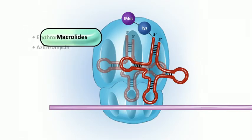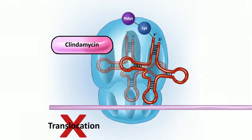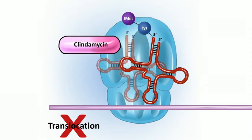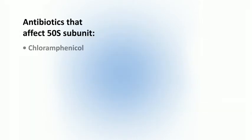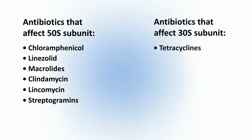Macrolide antibiotics — including erythromycin and azithromycin — bind to the 50S subunit and inhibit the translocation step. Clindamycin also binds to the 50S subunit and blocks translocation. Lincomycin and clindamycin are both classified as lincosamides; they both bind 50S and inhibit translocation. The streptogramins do the same thing. So antibiotics affecting the 50S subunit include chloramphenicol, linezolid, macrolides, clindamycin, lincomycin, and streptogramins; those affecting the 30S subunit are tetracyclines and aminoglycosides.